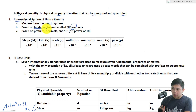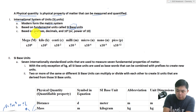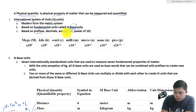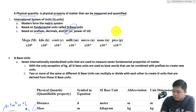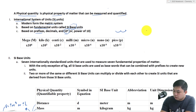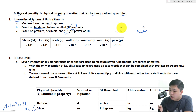One of the most beautiful things about SI units is that it is based on prefixes. What's special about the prefixes is that they represent powers of 10. This is important because when we multiply by 10 we just move the decimal, and when we divide by 10 we move the decimal the other way.